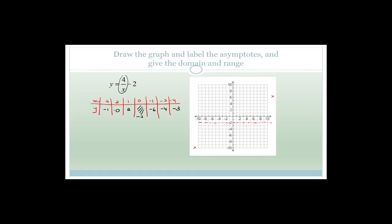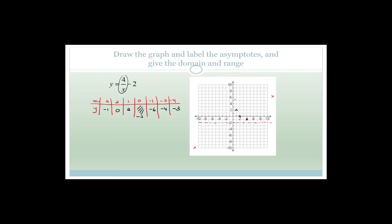Now all we have to do is plot these points. When x is four, y is minus one. I was having a panic attack because I'd forgotten that we'd shifted it — this is a perfectly correct value. If x is two, y is zero. If x is one, y is two. The graph does something like that. Please note it should never touch or cross the y-axis and never touch the asymptote, which in this case is y equals minus two.